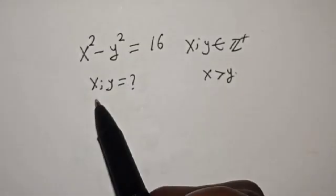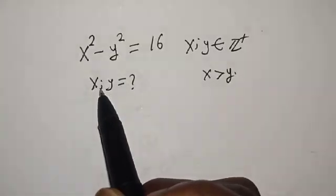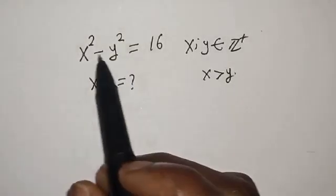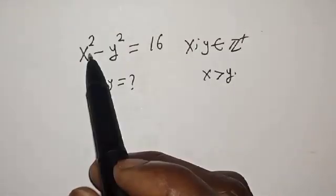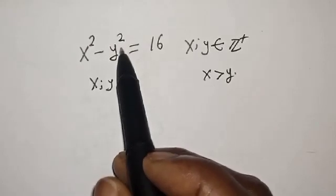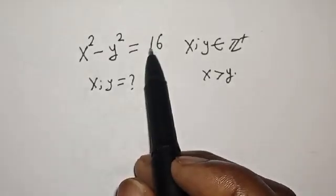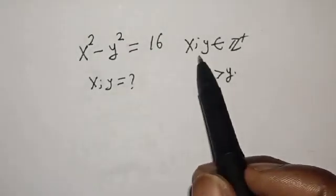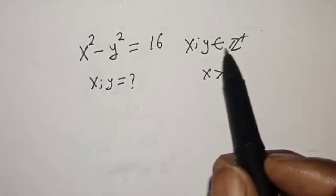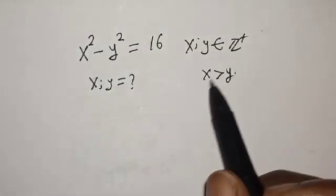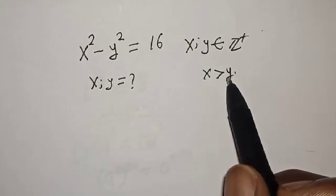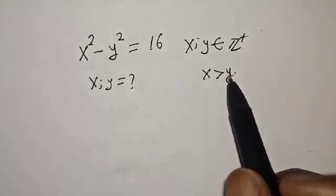Hello, welcome to Magist. In this class, we want to find the value of x and y from this equation: x squared minus y squared is equal to 16, where x and y are members of the positive integers and x is greater than y.